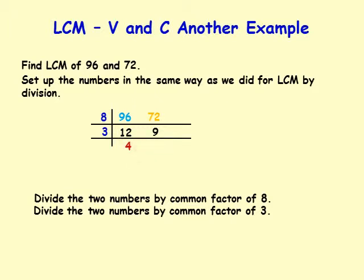Three and 4 are co-prime, no more common factors. LCM is 96 times 3 which is 288, or 72 times 4 which is 288.